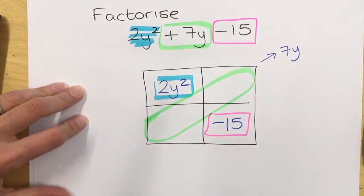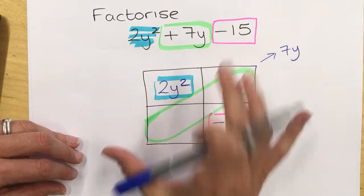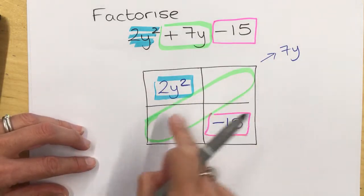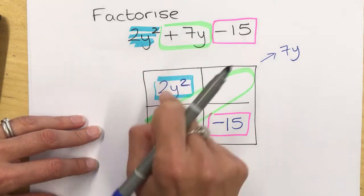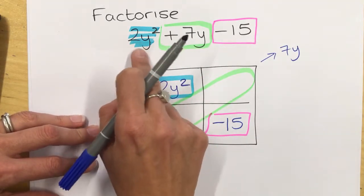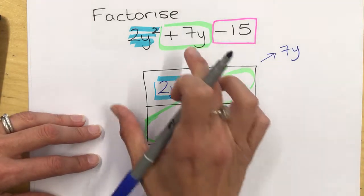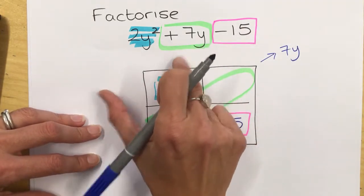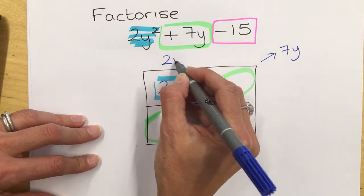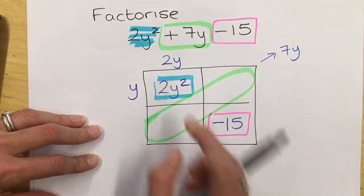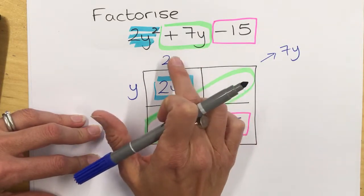Now what we have to do is work backwards to decide what we're going to put around this grid to make sure that all these things work. As the coefficient in this case is 2, that's a prime number, so there is only one combination of values that can go around here. And that has to be 2y and y, because that's the only combination that will give me the 2y squared when I multiply them.